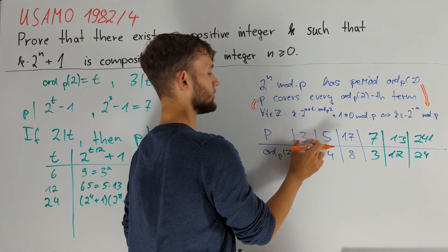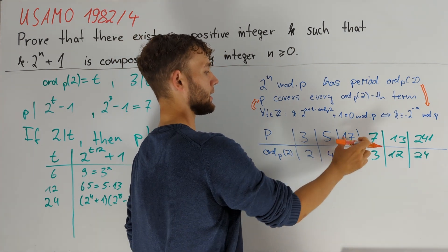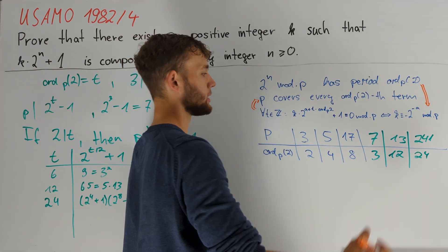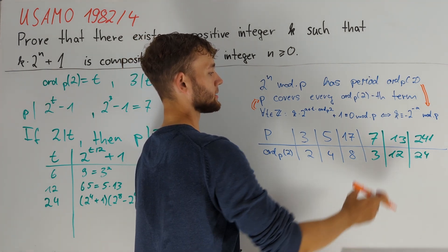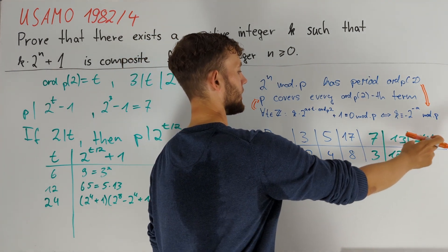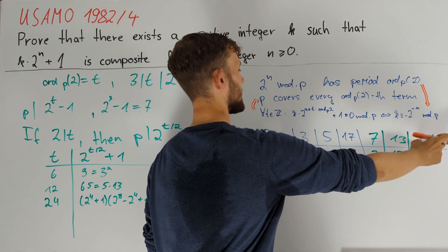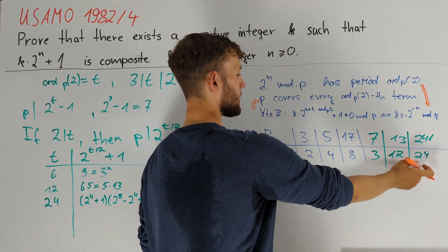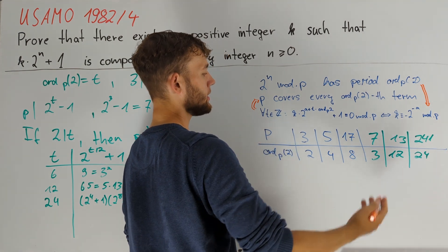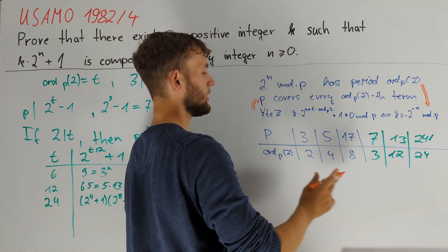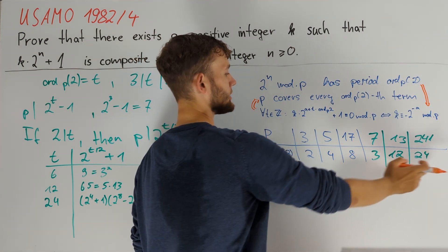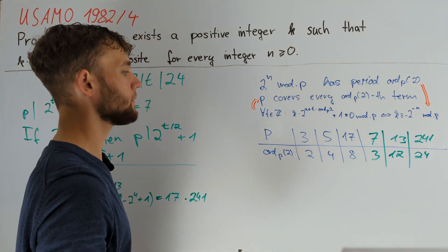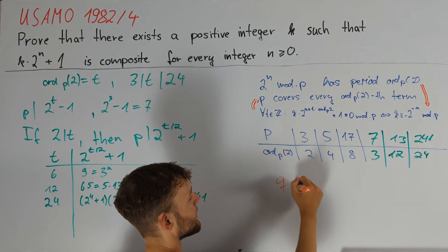In total, if we choose k in a suitable residue class modulo 3, 5, and 17, we will cover 7/8 of the terms. By choosing k in a good residue class modulo 7, 13, and 241, we can cover 3 distinct thirds of the remaining 1/8. Therefore, by the Chinese Remainder Theorem, there exists a k that satisfies all of these conditions simultaneously. We can also choose k large enough, and therefore we are done.